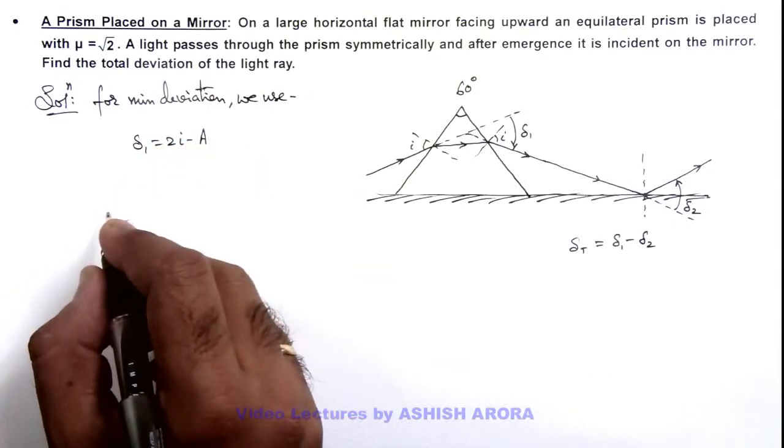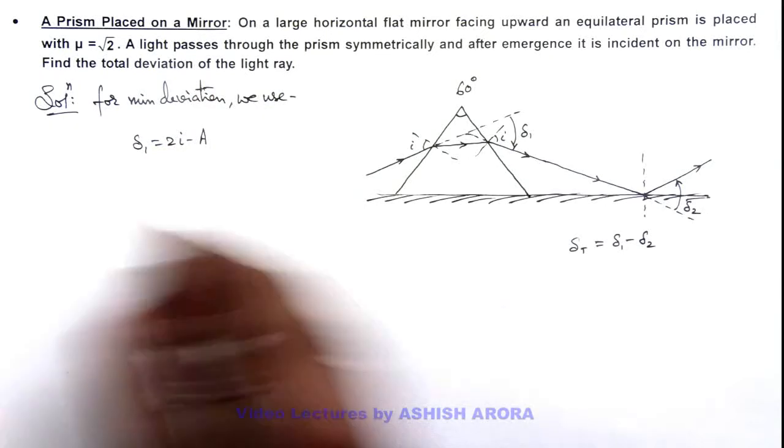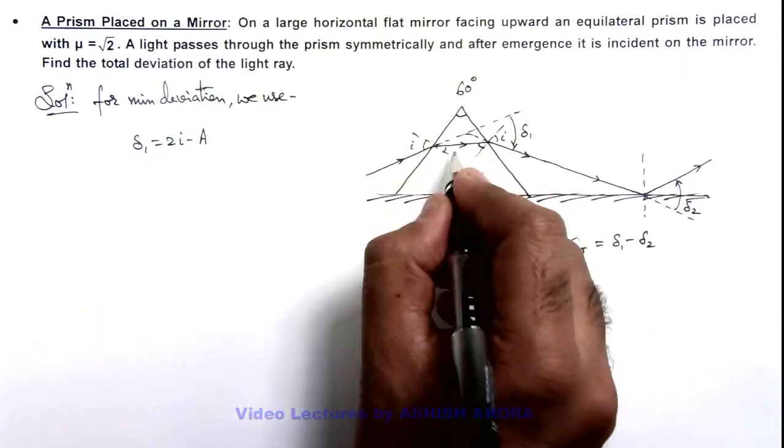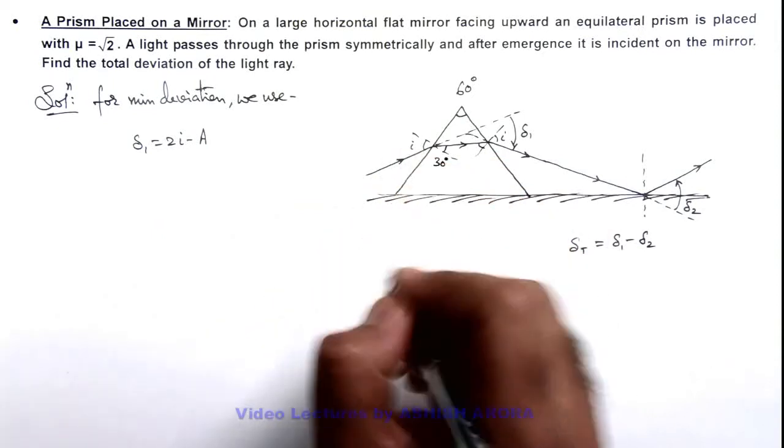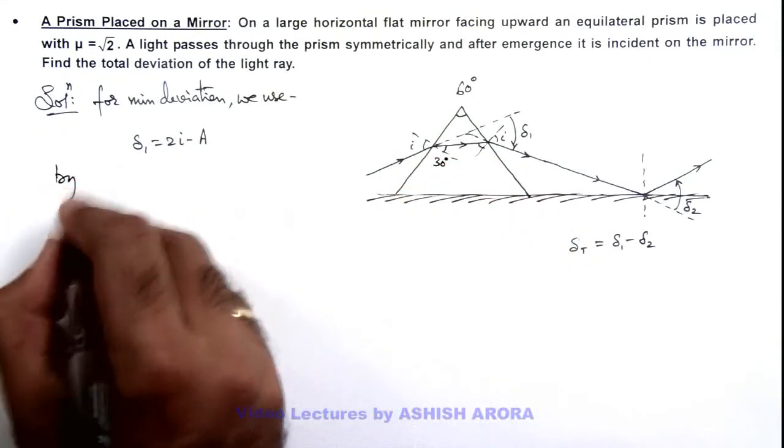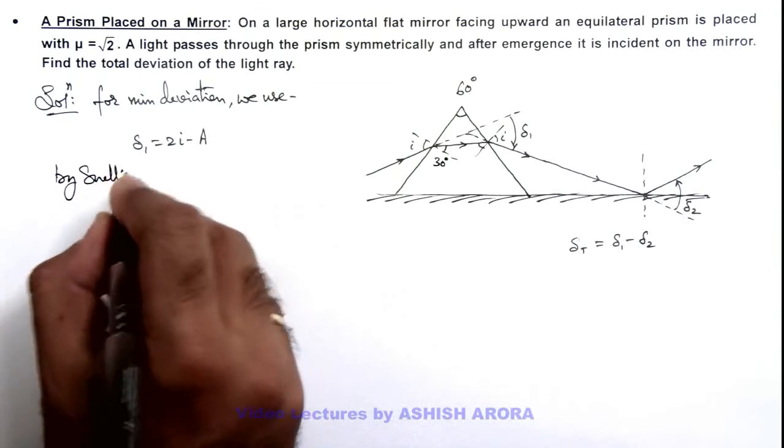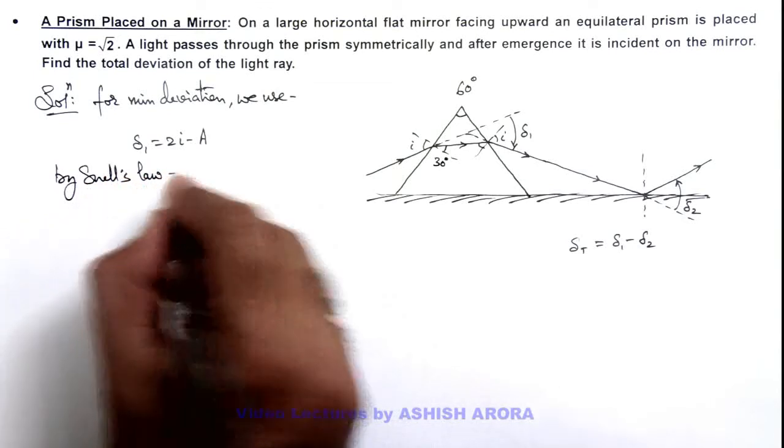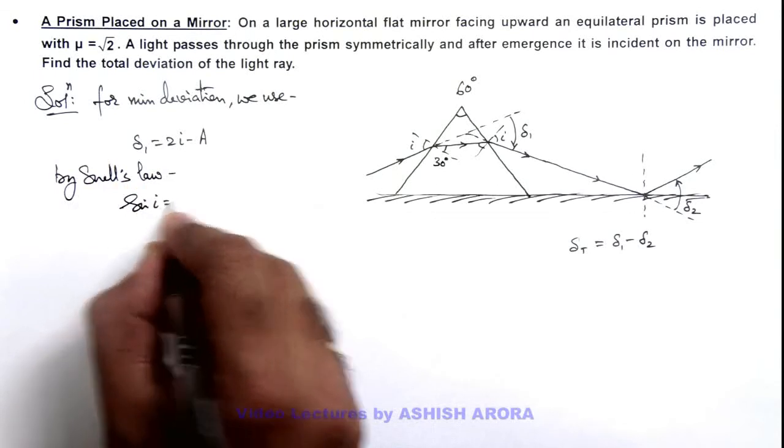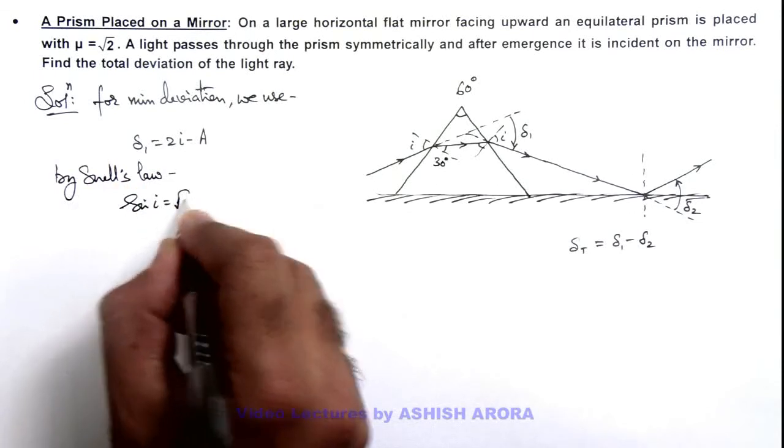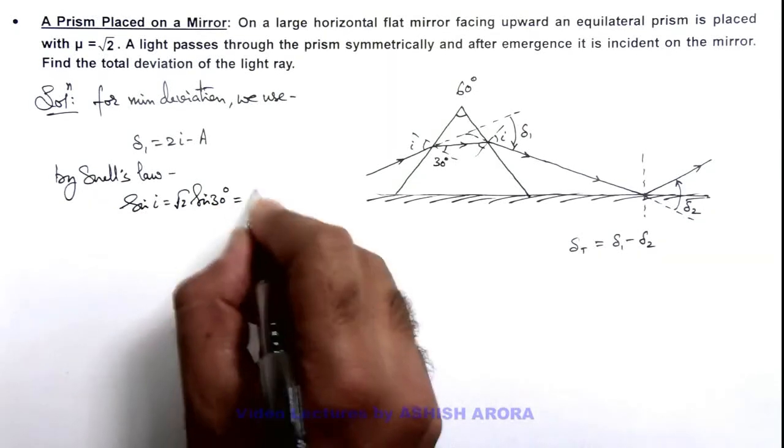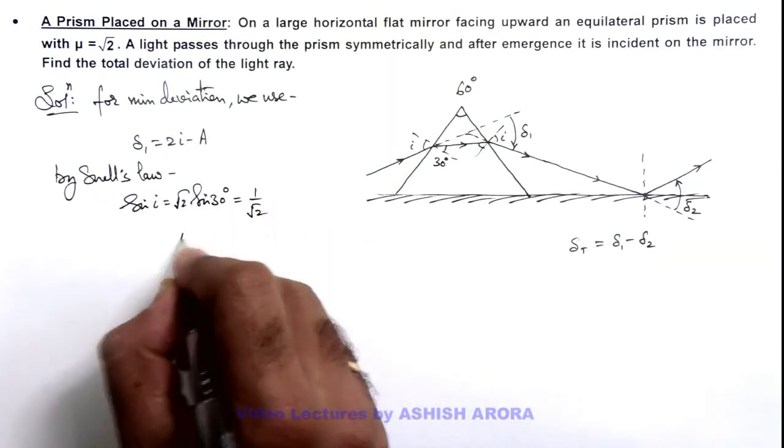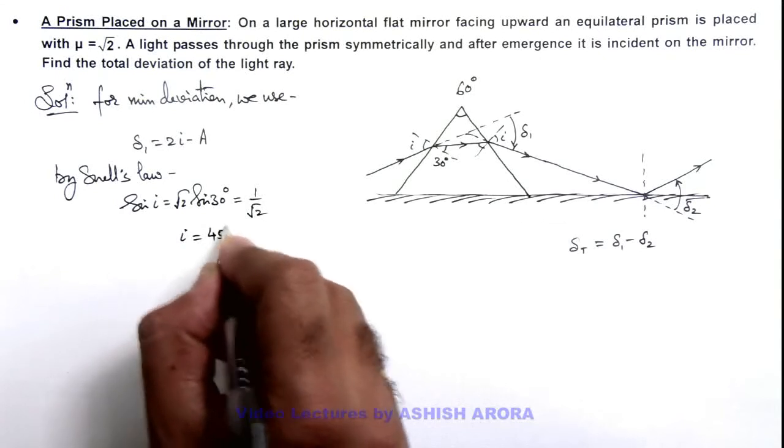And the value of refraction angle here is A by 2, that is 30 degrees, so the value of i can be calculated. Here by we can write sine i is equal to mu that is root 2 sine 30 degrees, which is equal to 1 by root 2, so the value of i we are getting is 45 degrees.